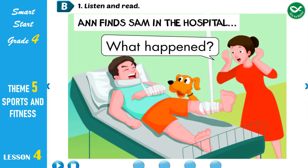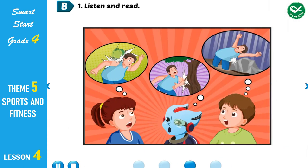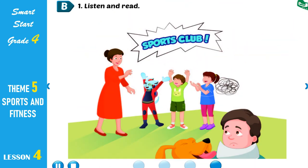B. 1. Listen and read. Anne finds Sam in the hospital. Oh, Sam! What happened? First, I jumped and hurt my ankle. Just her ankle? Look at you. Then what happened? Then he hit a tree and hurt his elbow. Oh, Sam! And then what happened? Then a coconut fell and hurt his neck. Yeah, that hurt. Is that all? Then what happened? Finally, he fell in the mud and hurt his back. Wow. What about you, kids? Are you okay? Yeah, Mom. The sports club was great!